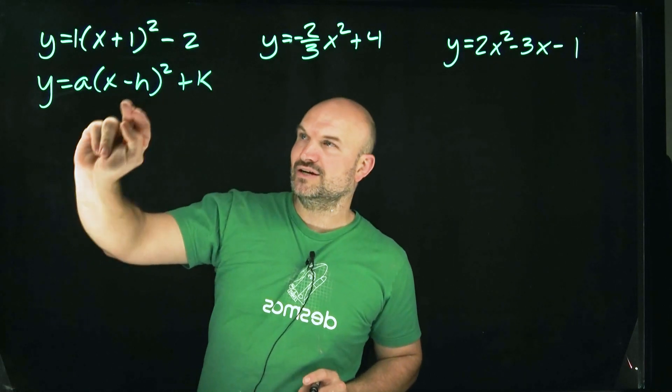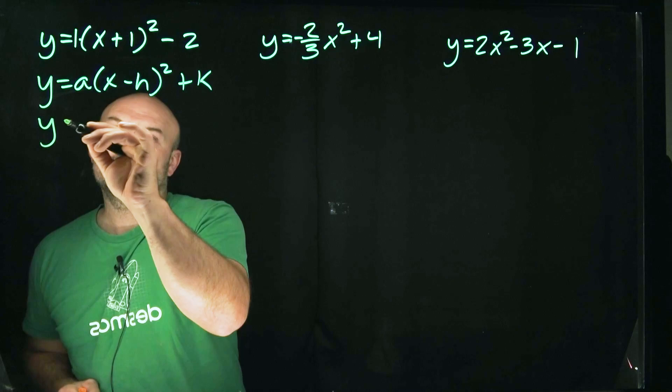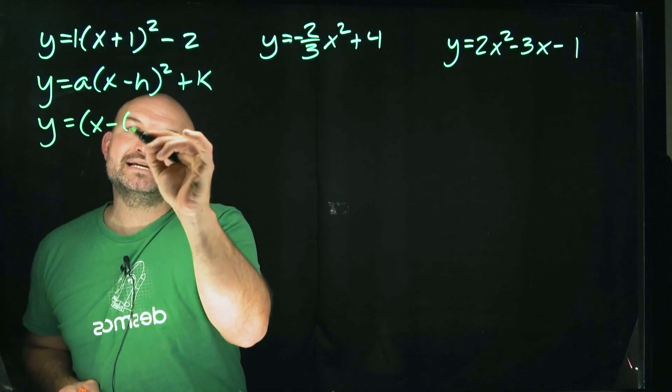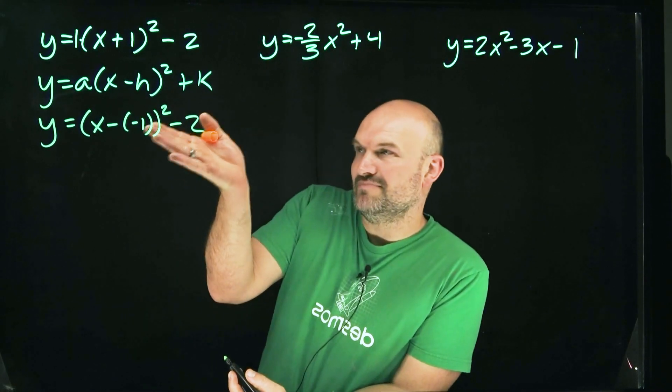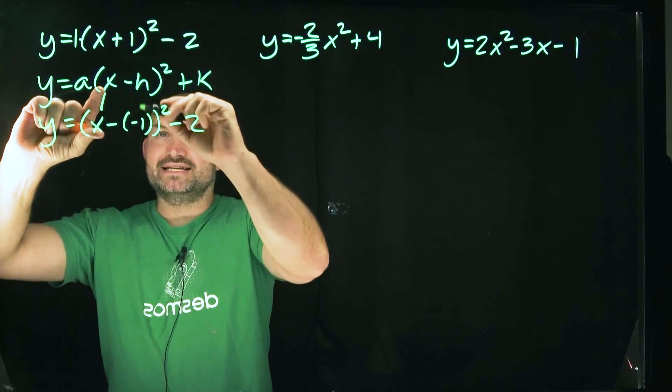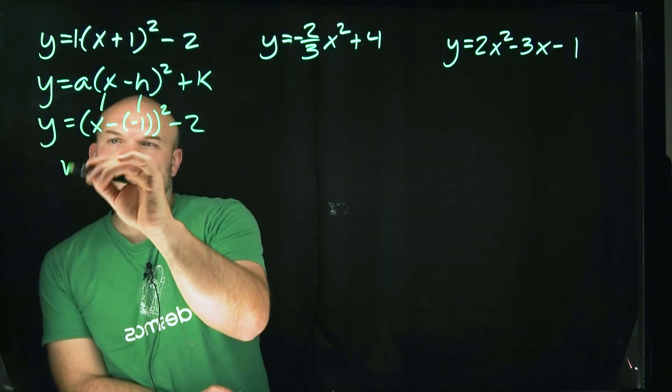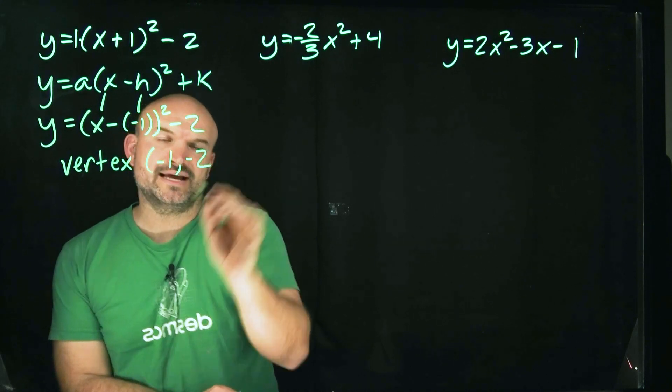But just remember the formula here is x minus h. So a better way we could write this equation is y equals a(x minus a negative one) squared minus two, right? Because minus a negative one is the same thing as positive. But now it matches up nicely with this formula. So therefore, we can identify here the vertex to be negative one, negative two.